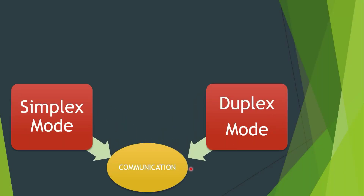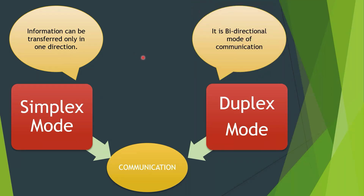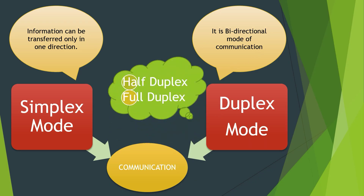Now let us understand the two modes of communication: simplex mode and duplex mode. In simplex mode, information can be transferred only in one direction. In duplex mode, bi-directional communication is present. Duplex mode can be further divided into half duplex and full duplex.